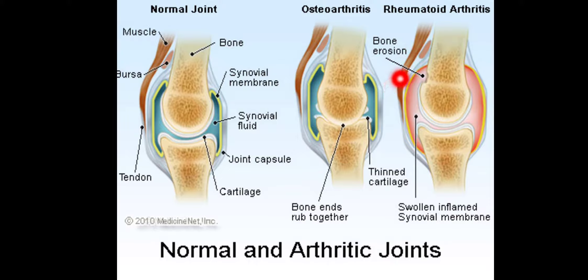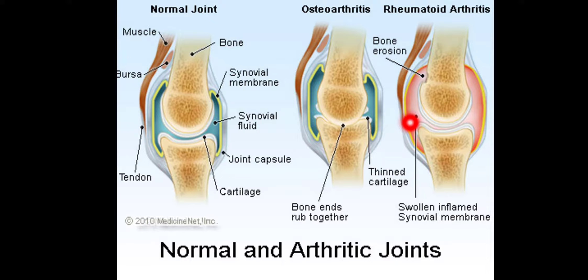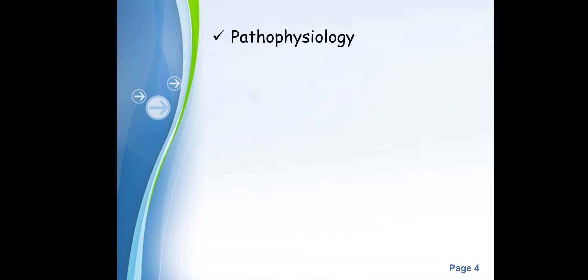In rheumatoid arthritis, you can see bone erosions — the autoimmune response causes erosion in bone — and there is swollen and inflamed synovial membrane. These are the basic differences between osteoarthritis and rheumatoid arthritis and how they differ from the normal joint.